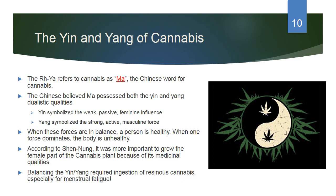The Riya refers to cannabis as 'ma.' The Chinese believed ma possessed both yin and yang qualities. Yin symbolized the weak, passive, and feminine influence; yang symbolized the strong, active, masculine force. When these forces are in balance a person is healthy; when one dominates, the body is unhealthy. According to Shen Nung, it was more important to grow the female part of the cannabis plant because of its medicinal qualities — female plants produce high-level THC buds. Balancing the yin and yang required ingestion of resinous cannabis, especially for menstrual fatigue.